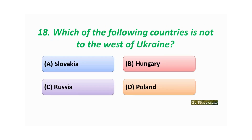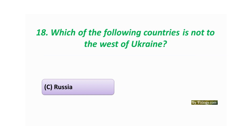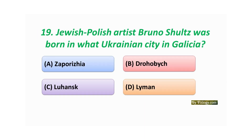Question number eighteen: Which of the following countries is NOT to the west of Ukraine? Option A: Slovakia. Option B: Hungary. Option C: Russia. Option D: Poland. The correct answer is Option C: Russia.